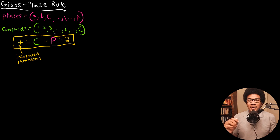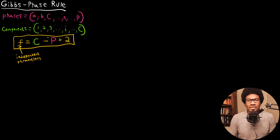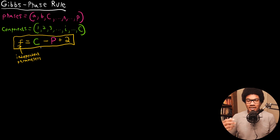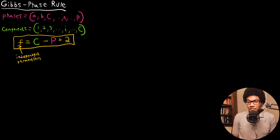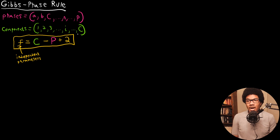The derivation of this equation is often referred to as one of the most elegant arguments in thermodynamics. So I want to take you through Gibbs's original thought of how you arrive at this equation — this very simple equation for the number of independent parameters that you can vary without disturbing the equilibrium. First, let's think about how many total ways we can define each of the components and phases in this system.